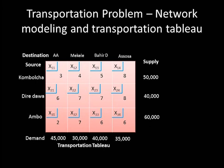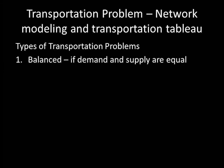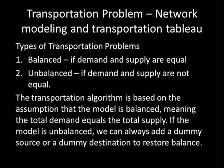There are two types of transportation problems. A balanced transportation problem is one where demand and supply are equal. An unbalanced transportation problem is one where demand and supply are not equal. The transportation algorithm is based on the assumption that the model is balanced, meaning total demand always equals total supply. If the model is unbalanced, we can always add a dummy source or a dummy destination to restore balance.